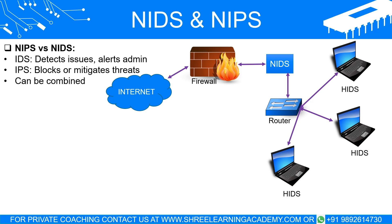Intrusion Detection System (IDS): Think of IDS like a security camera in a store. It watches network traffic and alerts the system administrator if it sees something suspicious, like a potential hacker or malware. However, it won't directly stop the threat — it simply alerts you. Intrusion Prevention System (IPS): IPS, on the other hand, is like a security guard in the store. It not only detects suspicious behavior but also takes action to prevent unauthorized access or data breaches. In this way, IPS is more proactive than IDS.